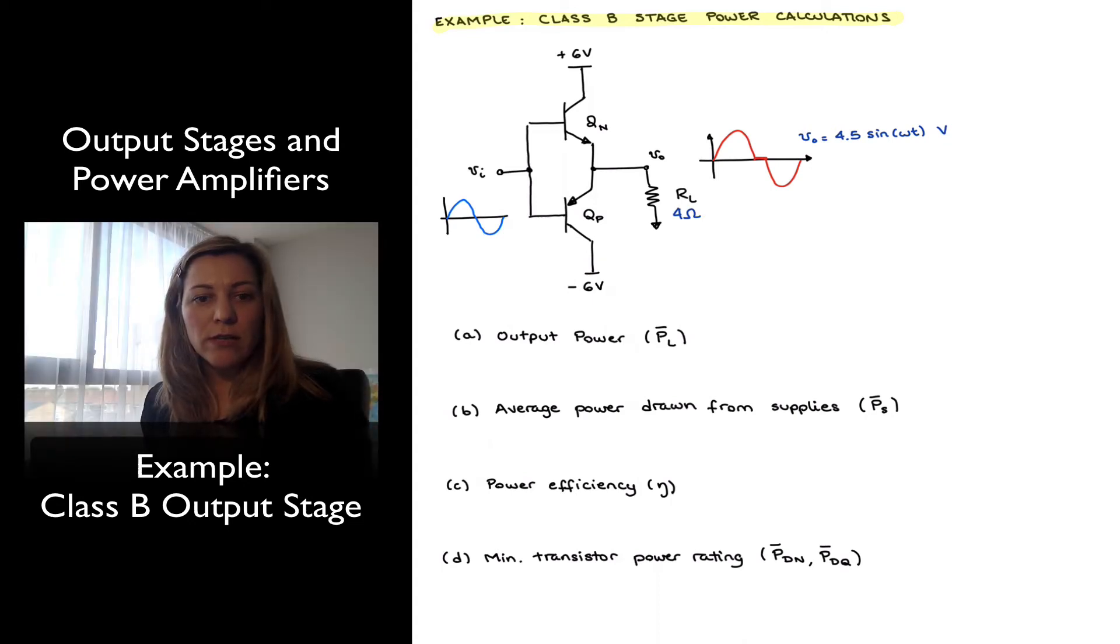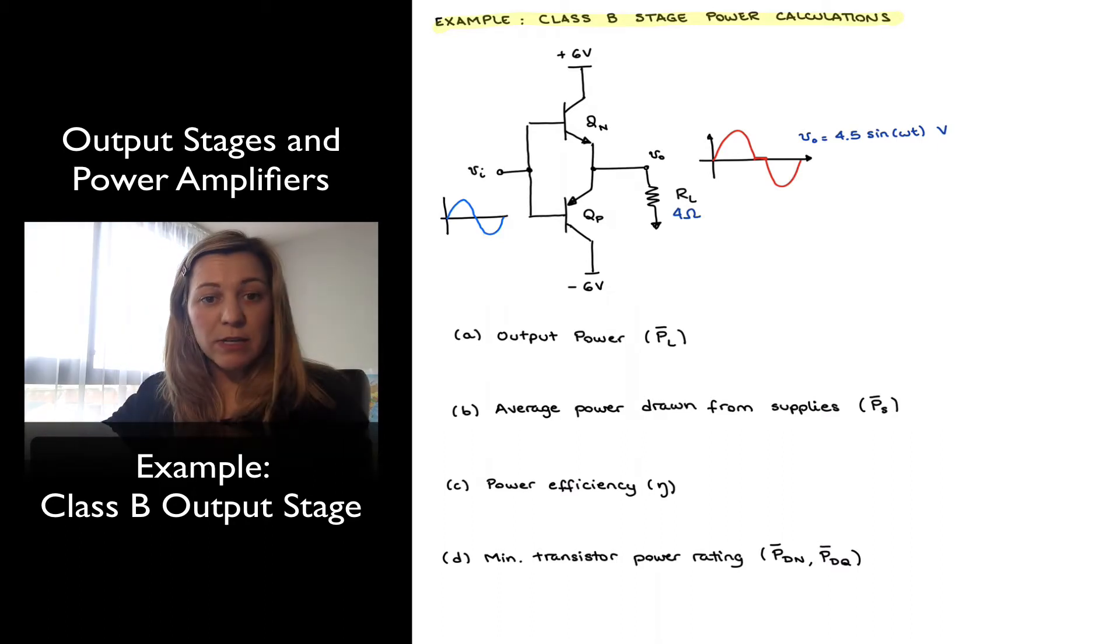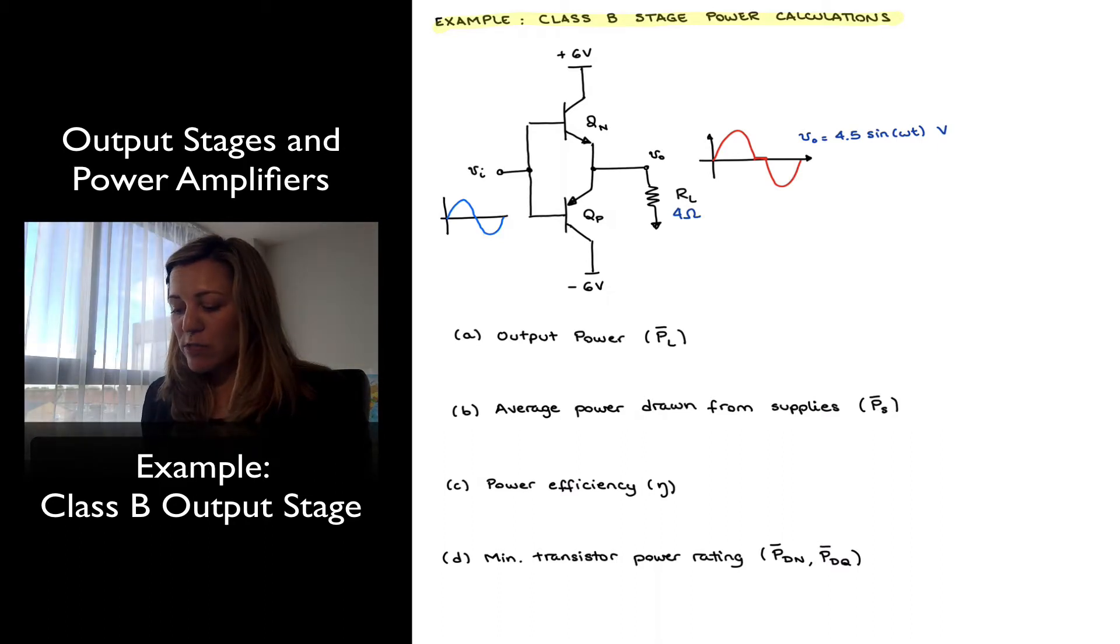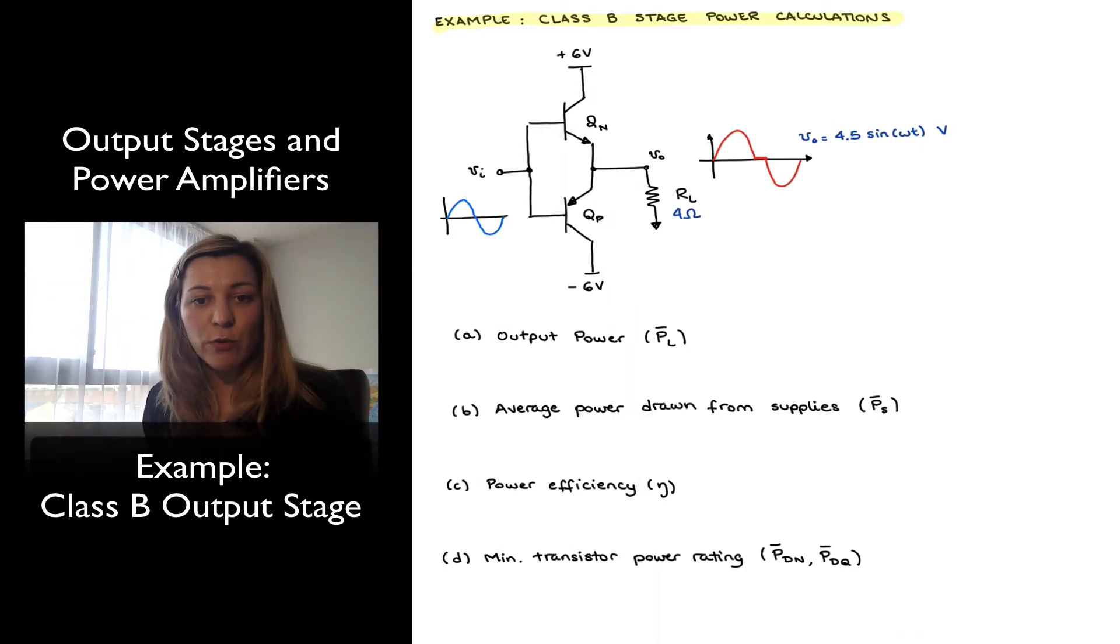Now that we've taken a look at the class B push-pull output stage, I wanted to do an example with some power calculations. I've drawn here my class B push-pull output stage, just like the one we've previously discussed. Notice that I've made the power supply symmetrical, plus minus 6 volts. My load resistance is 4 ohms, and my output voltage is a sinusoidal wave with a peak voltage of 4.5 volts.